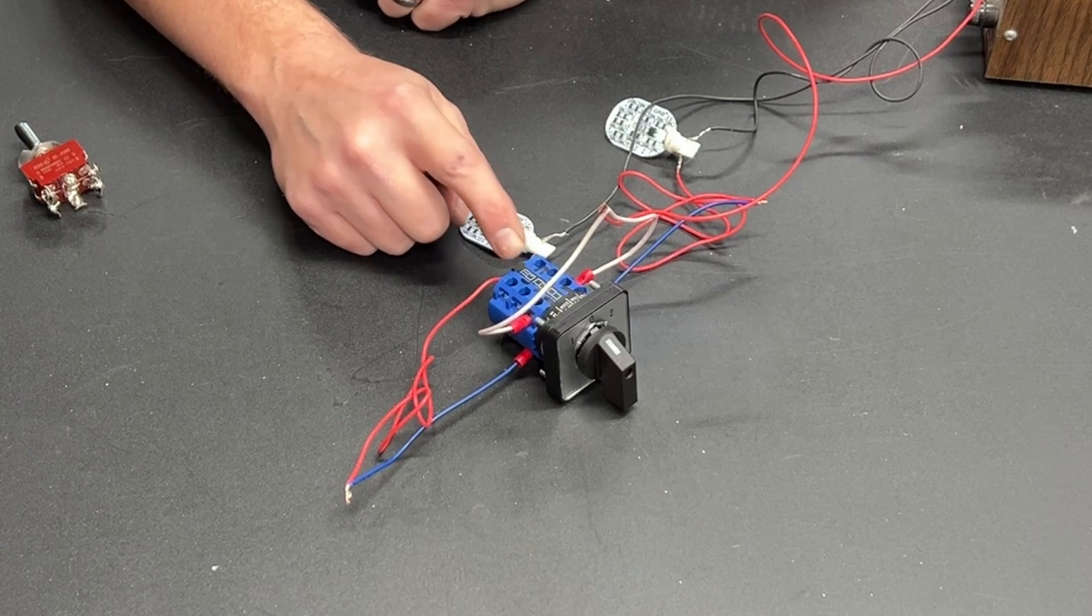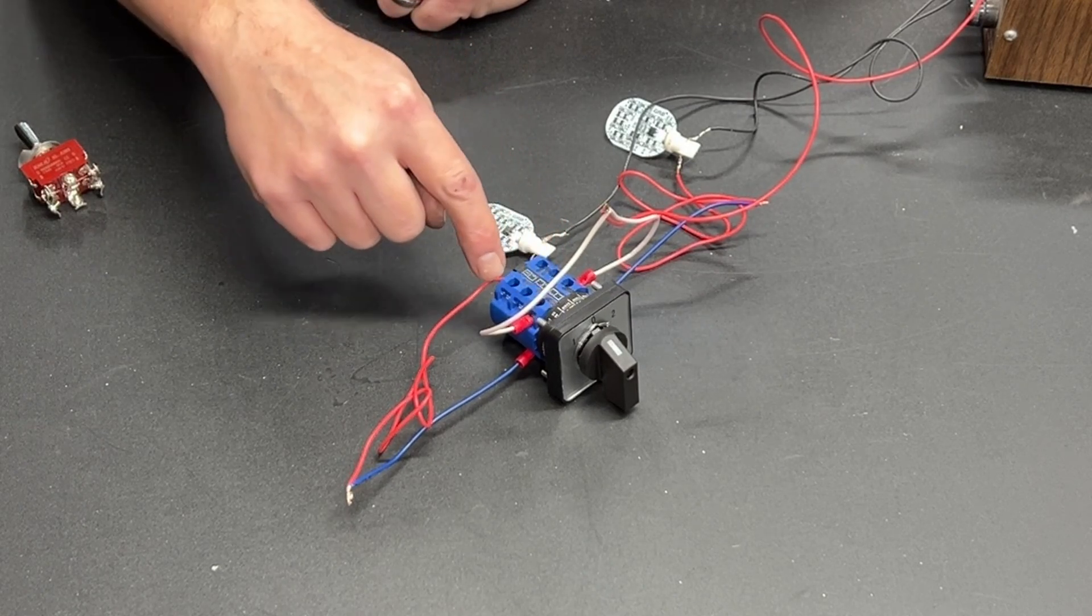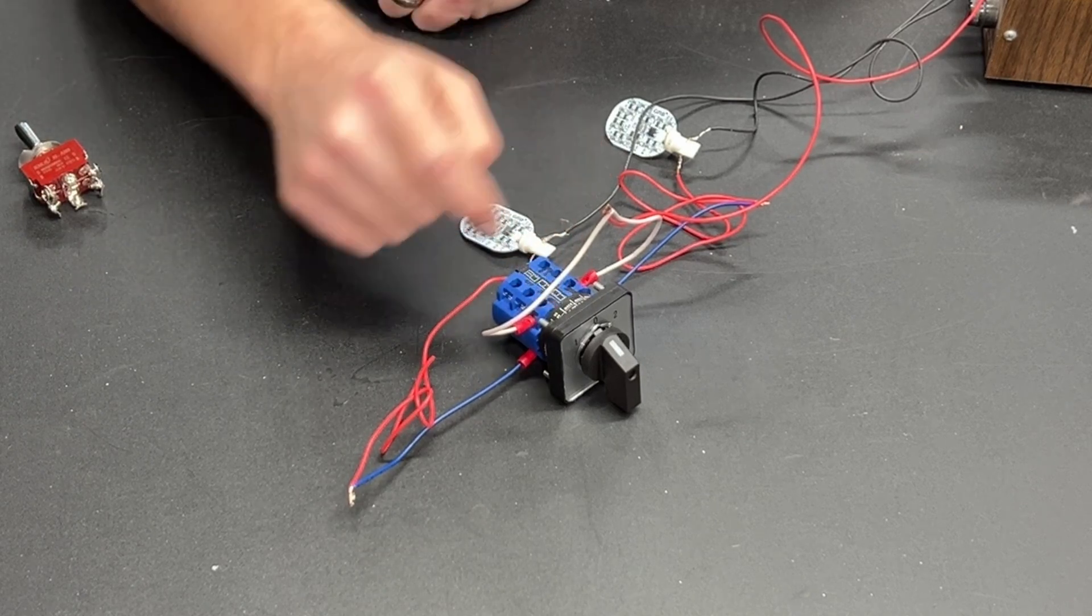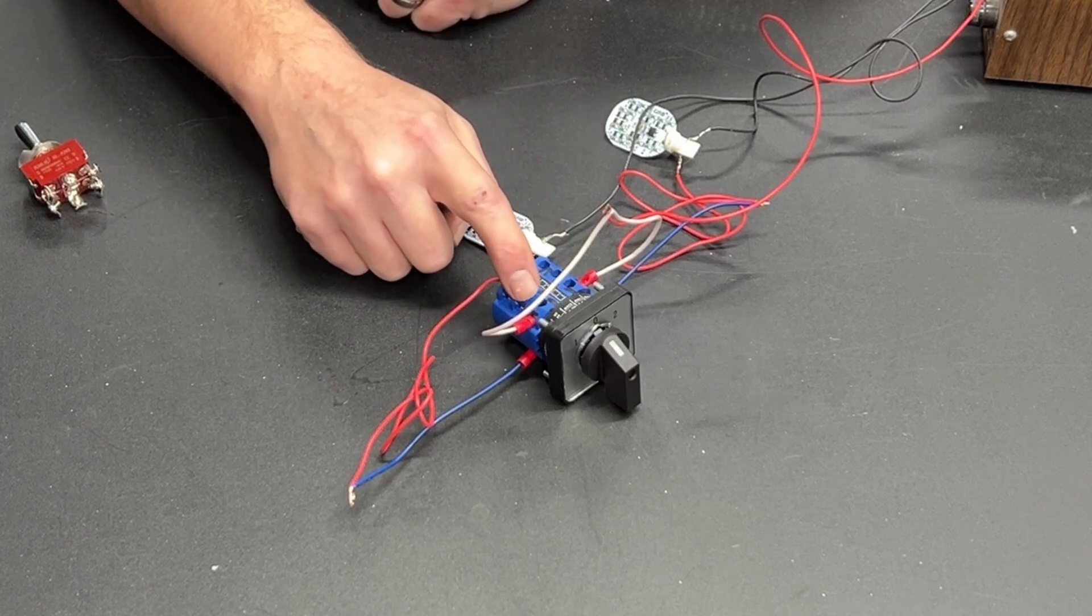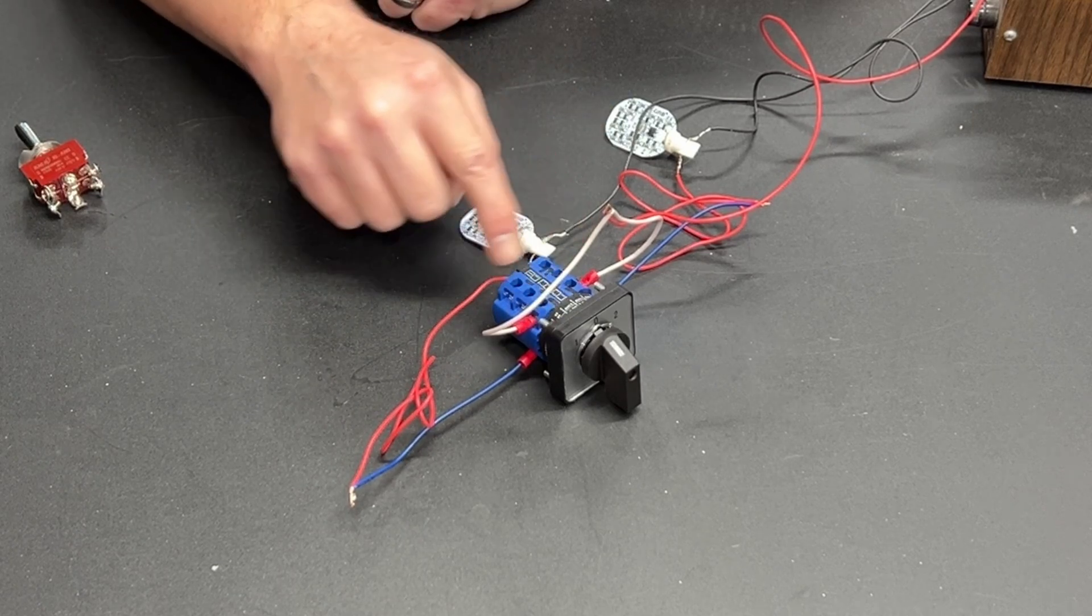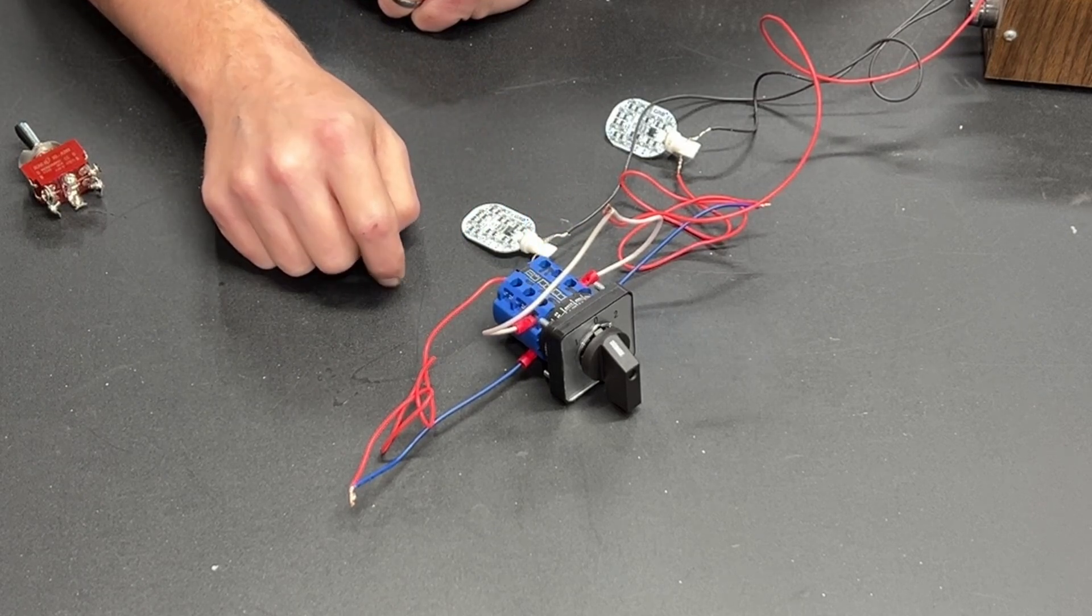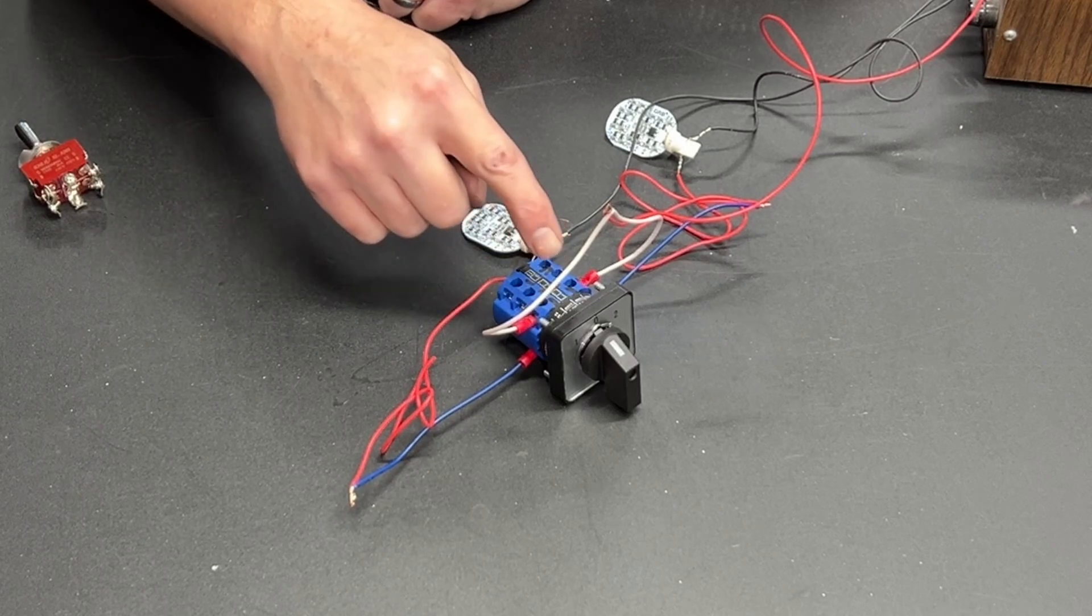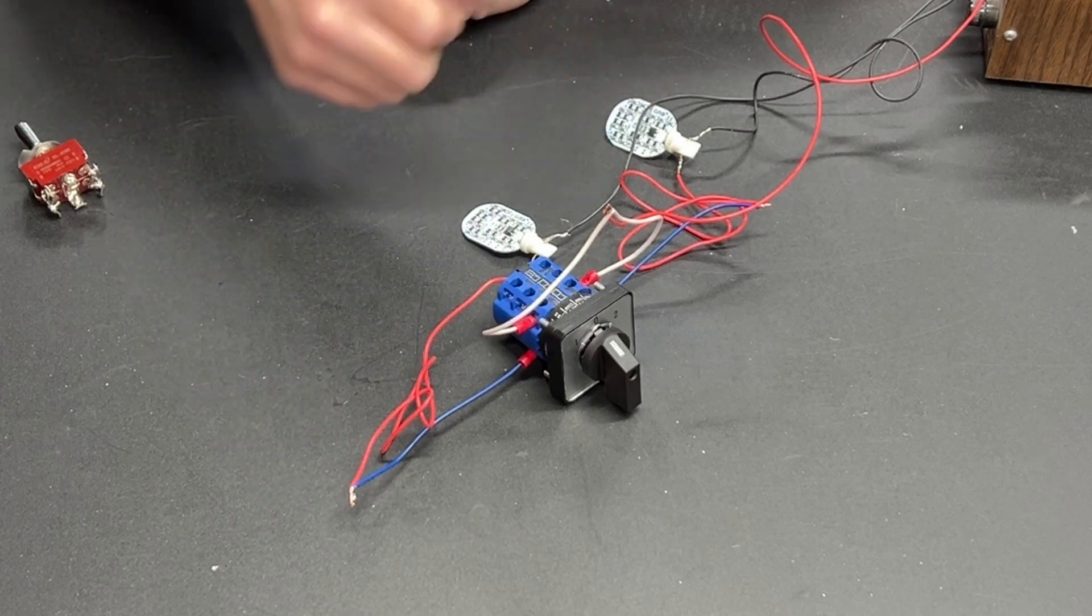Or in the case of this changeover switch it's actually three separate switches. You've got one, two, and three. So again if you connect this one to this one the way we have and then separate of that one you connect this one to this one and then separate of those two you connect this one to this one, you would have a triple pole double throw switch because it's three separate switches throwing to one side or the other.